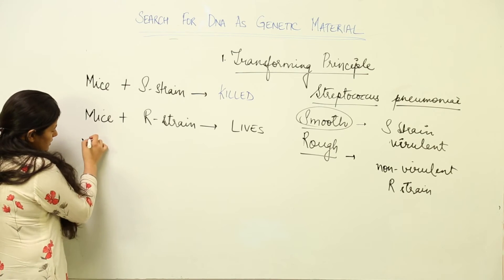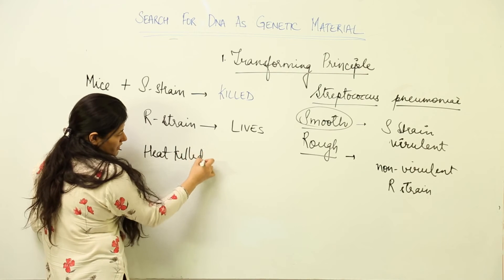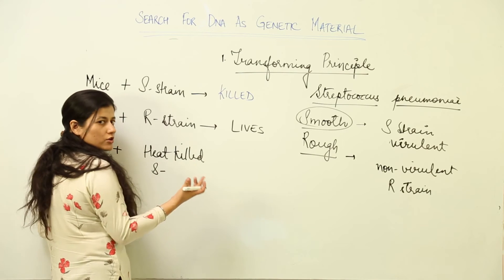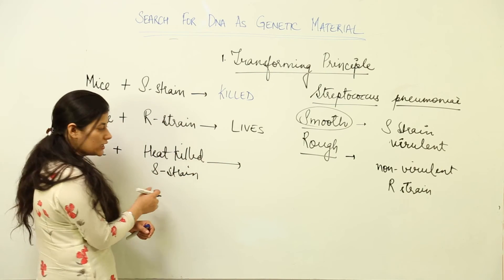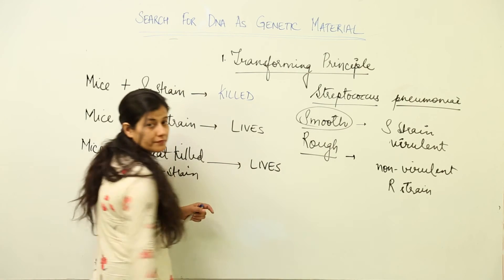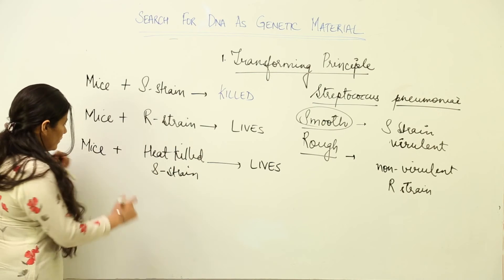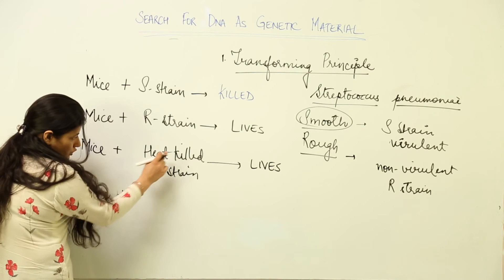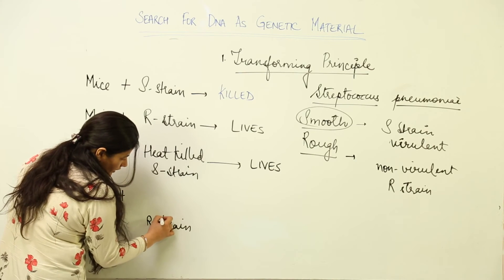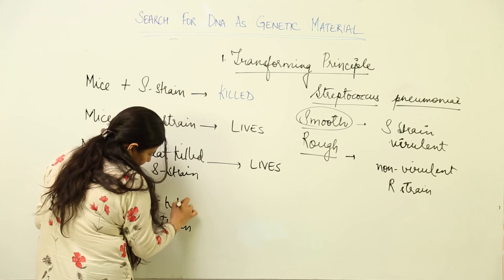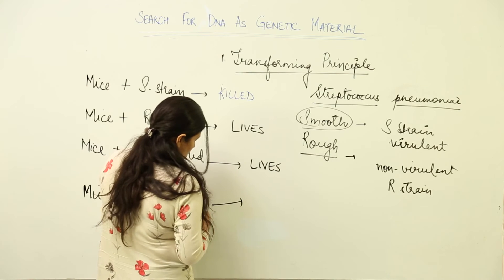In the next stage of the experiment, he took the S strain and heat-killed it by heating at a certain temperature. When mice were infected with these heat-killed S strain colonies, the mice lived again — meaning whatever was causing death had been inactivated by heat killing. Then he combined heat-killed S strain with living R strain and gave both to the mice, and the mice were killed again.